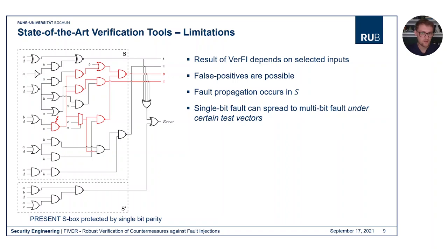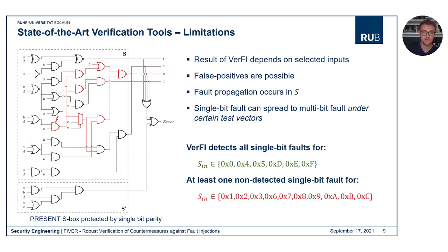This is a problem in WERFI, because WERFI can report false positives. In this example, this happens depending on which input vectors we use. If we inject the green set — inputs 0, 4, 5, D, E, or F — WERFI will correctly report all single-bit faults. But if we select inputs 1, 2, 3, 6, 7, 8, 9, A, B, or C, WERFI misses at least one non-detected single-bit fault and would report that your design is secure, which is wrong.